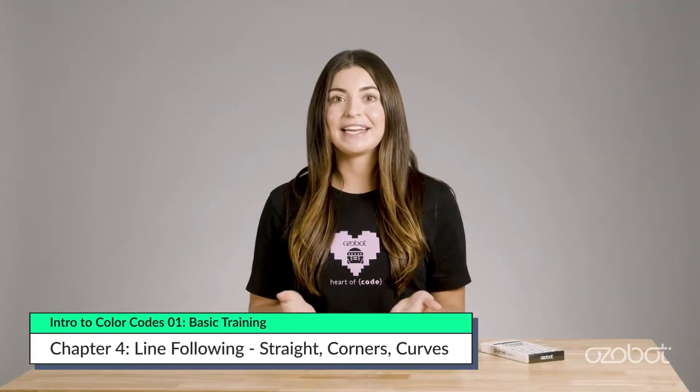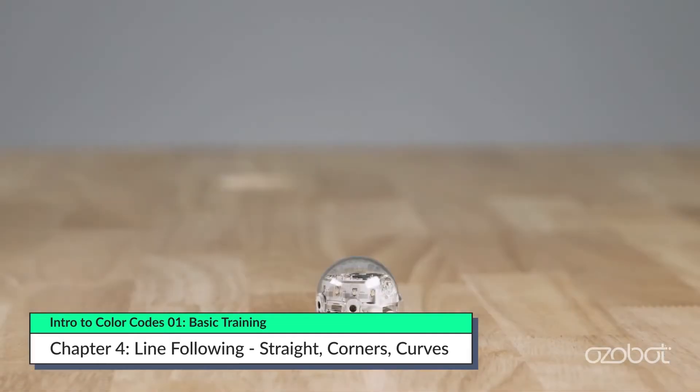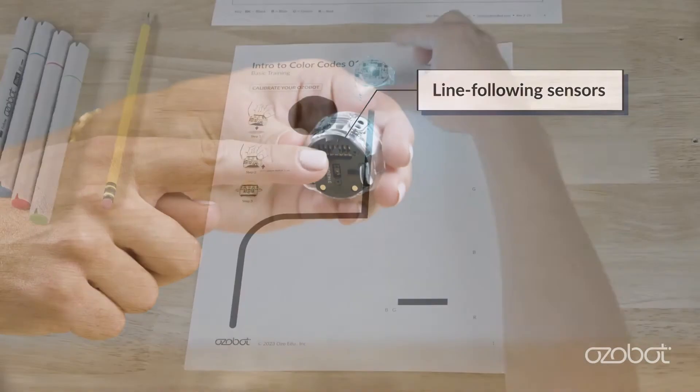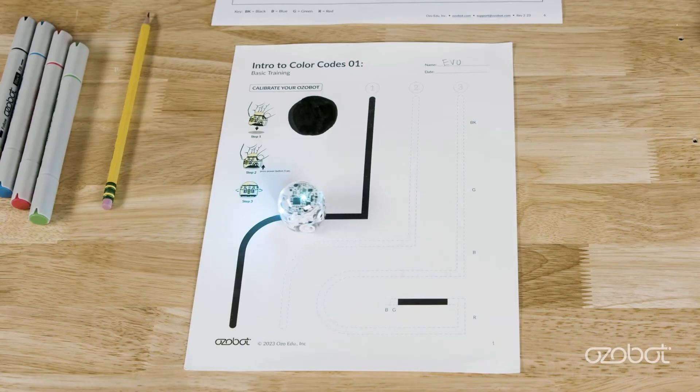Now that Ozobot is calibrated, you are ready to become a robot programmer. The line following sensors on the bottom of Ozobot allow it to follow lines. Place Ozobot on the start one of your activity sheet. Watch as it travels along the straight line, the corner, and the curve.